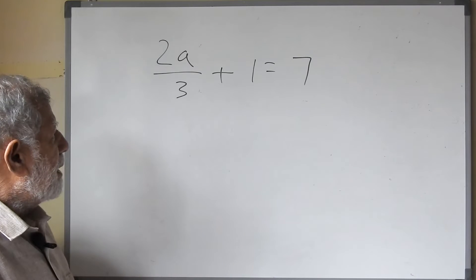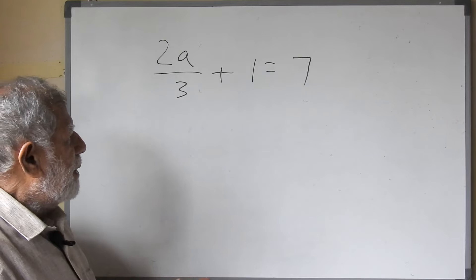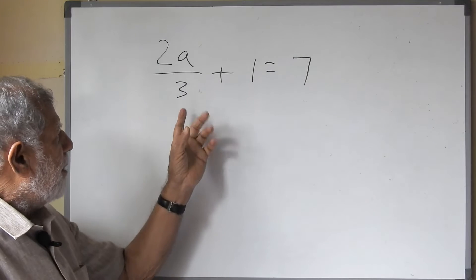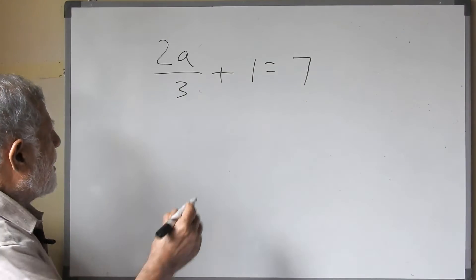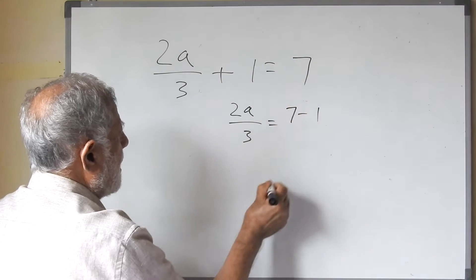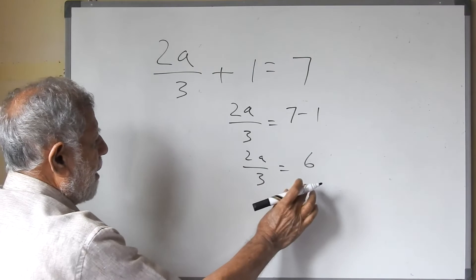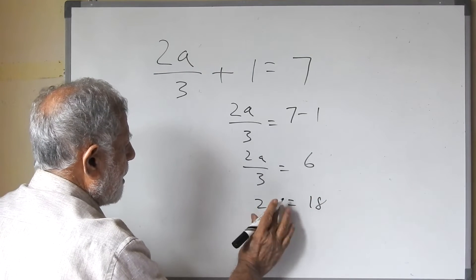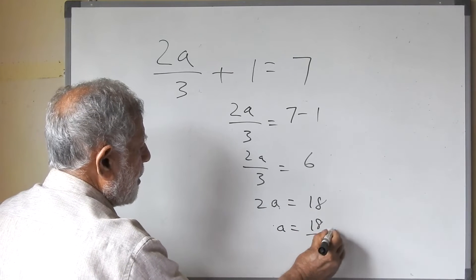Look — 2a upon 3 plus 1 equals 7. Some children get confused and don't know whether to cross-multiply or do it another way. But here it is not a case of cross-multiplying immediately. What we can do is get the 1 on to the other side. So 2a upon 3 equals 7 minus 1, which equals 6. Now cross-multiply: 3 into 2a equals 18.